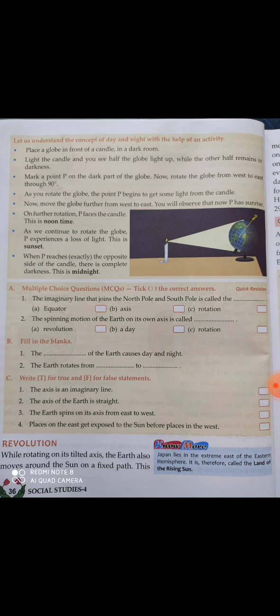So you place the candle and globe like that. What you will see is that half of the globe is covered with light and the other half is in darkness. Mark a point P on the dark part of the globe. Now rotate the globe from west to east through 90 degrees.